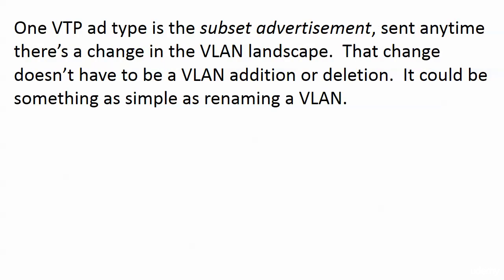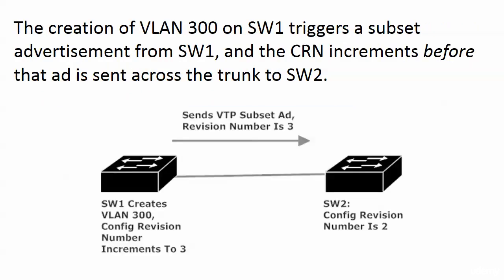The subset advertisement is the specific VTP ad type we want to focus on here. There are other ad types, but those are saved for NP studies — they're not part of the CCNA. Subset ads go out any time there's a change in the VLAN landscape. As you'd expect, that covers just about anything: an addition, a deletion, a rename — any change like that triggers an immediate notification to the switches that the particular switch is trunking with.